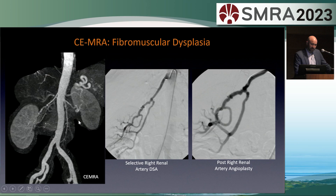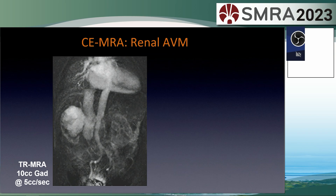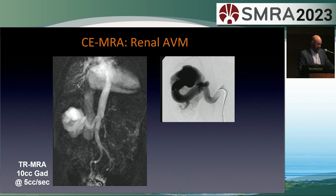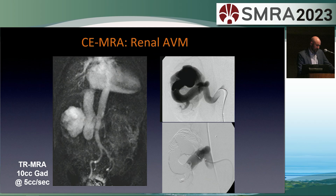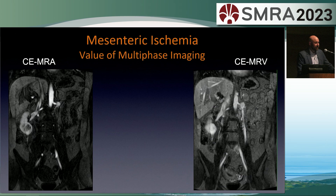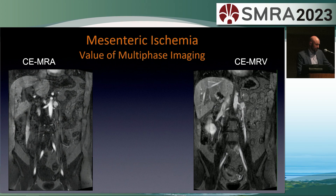A very common referral at Mayo Clinic for contrast-enhanced MR in the abdomen remains renal artery stenosis. This is a classic example of fibromuscular dysplasia in the right renal artery, confirmed on angiography and treated with balloon angioplasty with improved luminal caliber. Dynamic imaging allows assessment of blood flow through the region of interest and can isolate the arterial feeder and draining veins in this patient with a large renal AVM, confirmed with catheter angiography and ultimately embolized with a large number of coils.